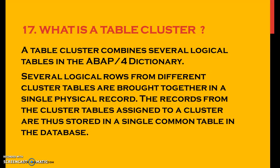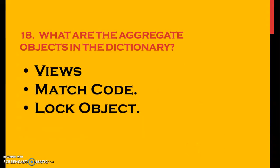What is a table cluster? A table cluster combines several logical tables in the ABAP dictionary. Several logical rows from different cluster tables are brought together in a single physical record. The records from the cluster tables assigned to a cluster are stored in a single common table in the database. What are the aggregate objects in the data dictionary? Aggregate objects are views, match codes, and log objects.